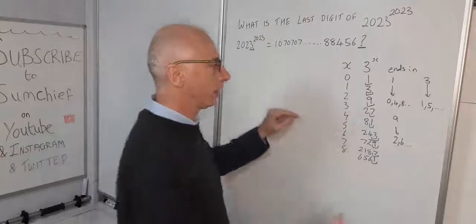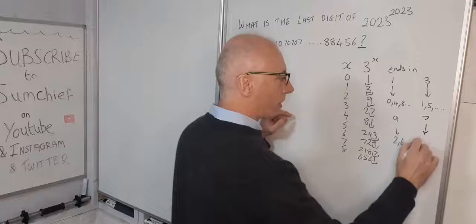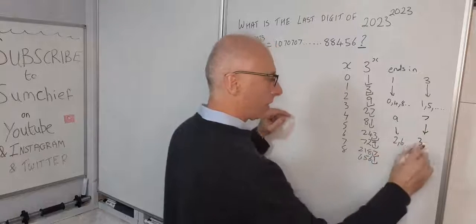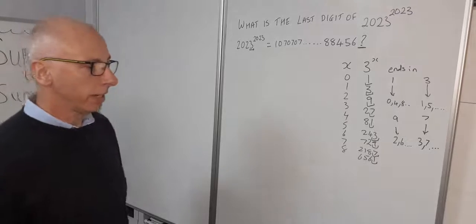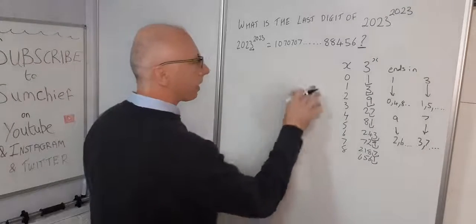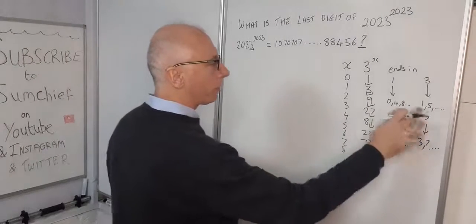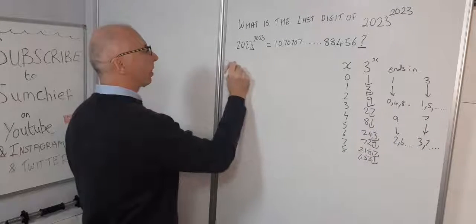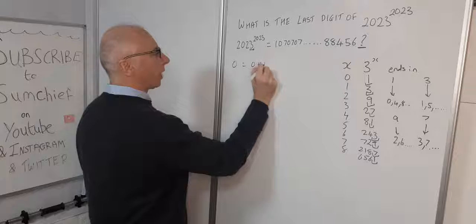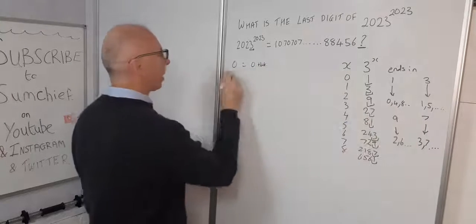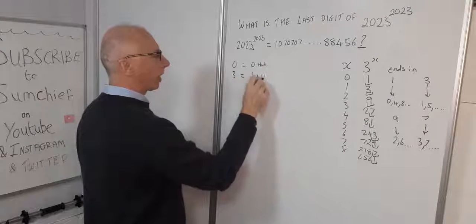Then ending in 7, that gives us 3, 7, and so on. Now what we need is a little formula for these. For 0, it equals 0 + 4k. For 3, 1 + 4k. For 9...